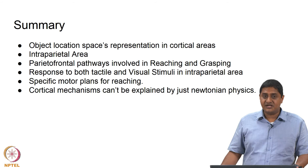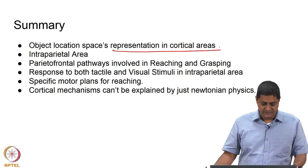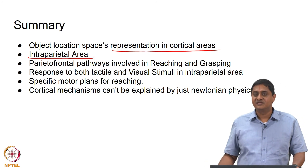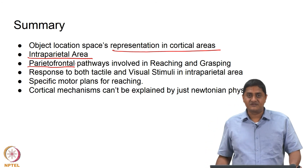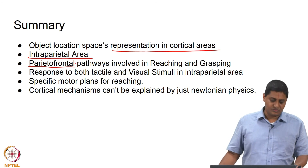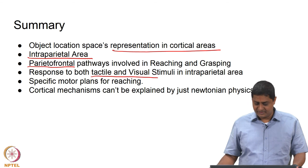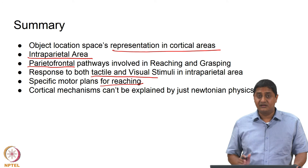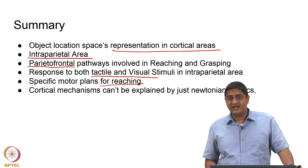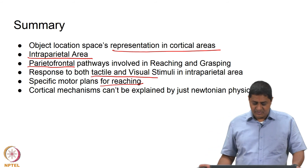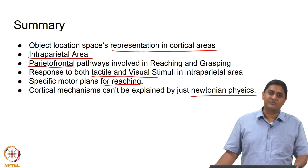In summary, object location is represented in cortical areas in multiple independent regions. The intraparietal area — specifically the VIP and AIP areas — and parietal-frontal pathways are crucial for reaching and grasping. Area F5 has special neurons dedicated to hand-to-mouth movements, and independent neurons encode tactile and visual stimuli in the intraparietal areas. The parietal region encodes targets in a gaze-direction-based coordinate system, and cortical mechanisms cannot be explained by Newtonian physics alone. With this we come to the end of this lecture — thank you very much for your attention.